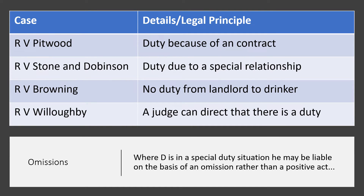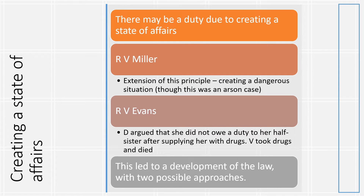With respect to omissions, where a defendant is in a special duty situation, they may be liable on the basis of omission rather than a positive act. A defendant may create a state of affairs and thereby acquire an obligation to act — if they fail to act, they may be guilty of an offence. The case of Miller established the principle of creating a dangerous situation, though that was an arson case. In Evans, the defendant argued she did not owe a duty of care to her half-sister after supplying her with drugs, but the victim took the drugs and died. This case led to two approaches to establishing a duty via a state of affairs.